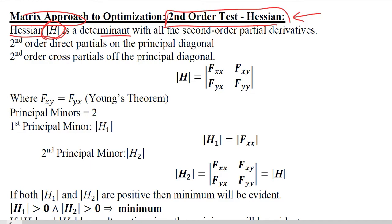If we have a two into two order, there will be two second-order direct partial derivatives and there will be two second-order cross partial derivatives. The first one will be the principal diagonal and the second one will be in the secondary diagonal.